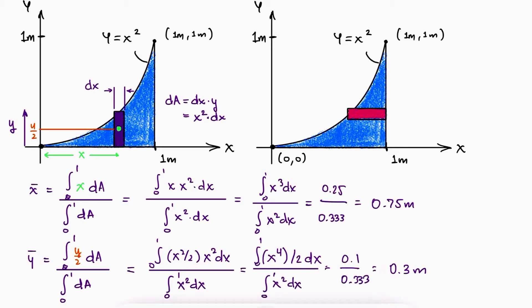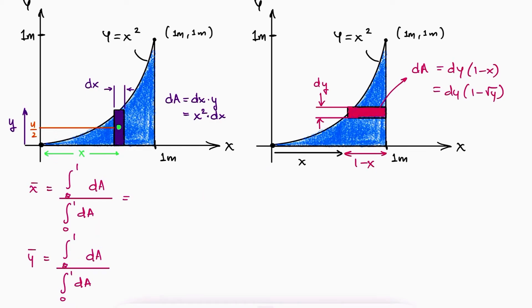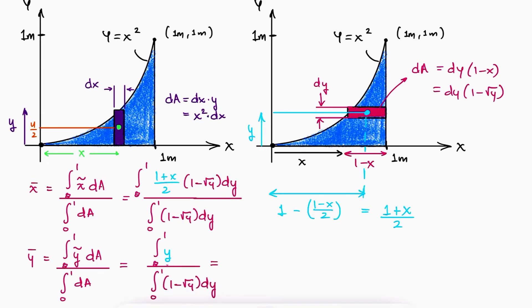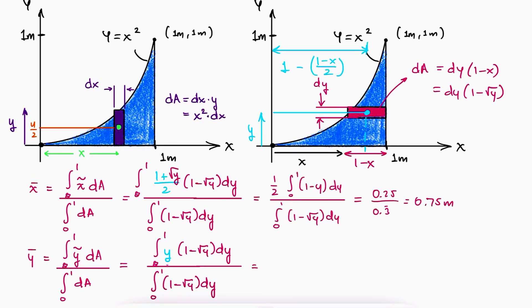If we had used horizontal rectangles for finding the centroid, the dA element would be equal to dy times 1 minus x, which in terms of y would be 1 minus square root of y. The centroid term for each rectangle would be y for y bar, and 1 minus half of 1 minus x for x bar, which results in 1 plus x over 2. Substituting the variables, performing the integrals, and evaluating from 0 to 1, the boundaries of the area, we would still get a 0.75 for x bar and a 0.3 for y bar.